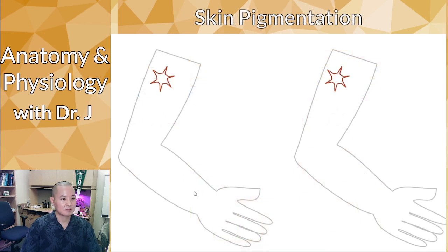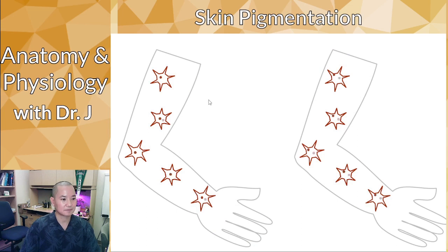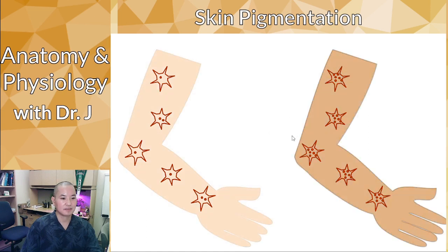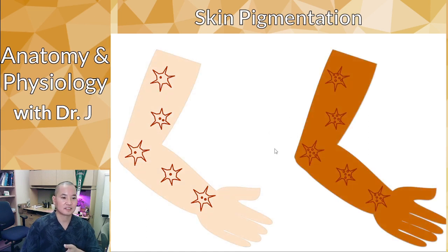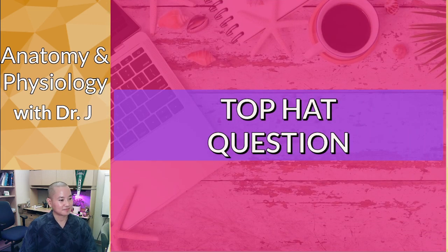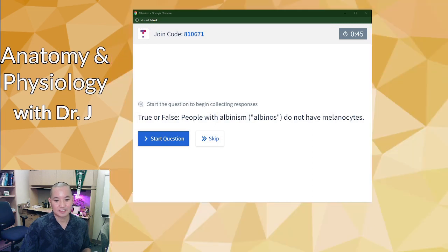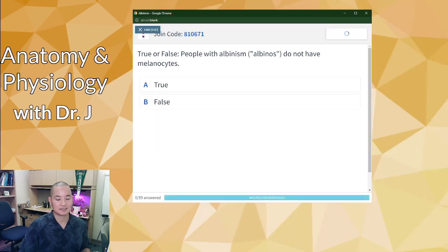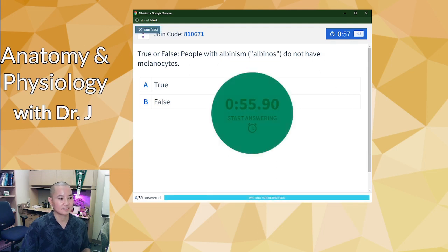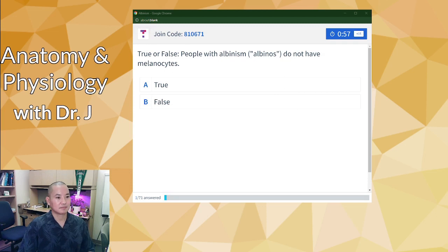Skin pigmentation depends on how much melanin your melanocytes produce. If they produce only a little, you have some color. If they produce a lot, you have a darker skin tone because melanin is that dark reddish-brown pigment. Let's look at a question: people with albinism do not have melanocytes — true or false?